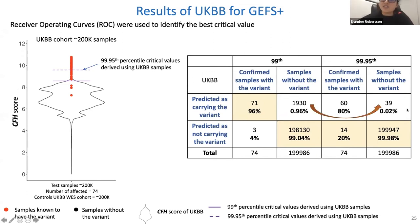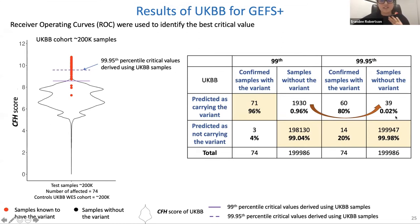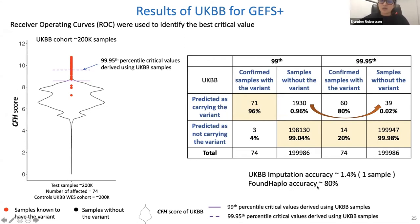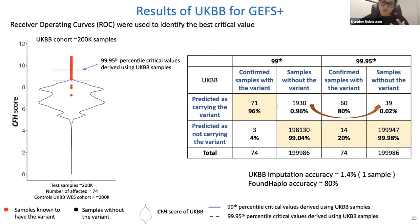At the 99.95th percentile cutoff, incorrect classifications drop to a very small number for such a large cohort. When comparing FoundHaplo's accuracy with traditional imputation accuracy in UK Biobank, FoundHaplo gives much better gain by leveraging known disease haplotypes. These two applications show that FoundHaplo is an efficient test statistic for predicting individuals with known disease variants.